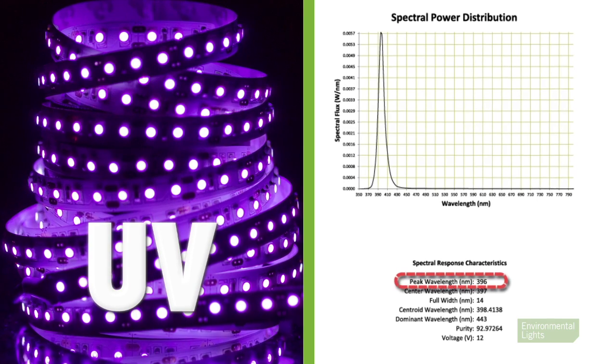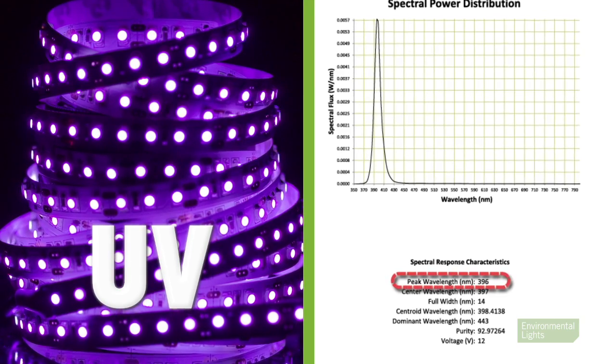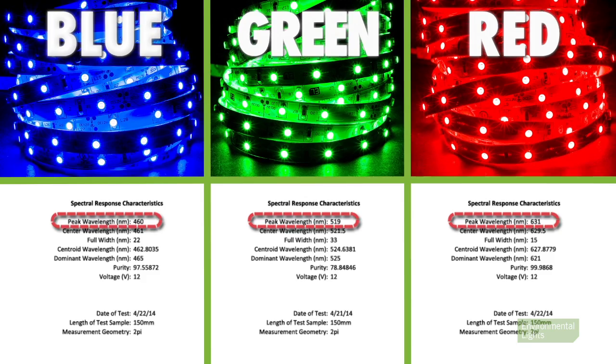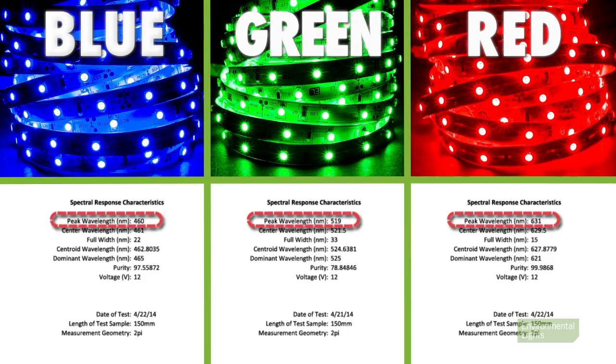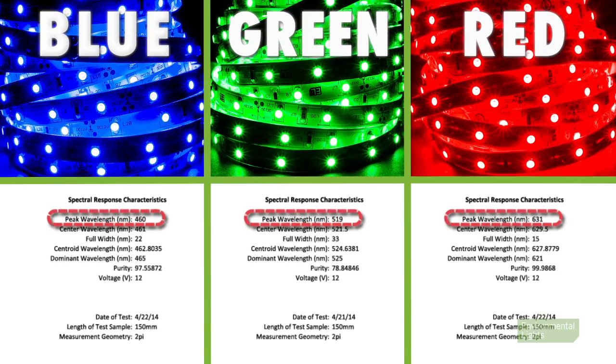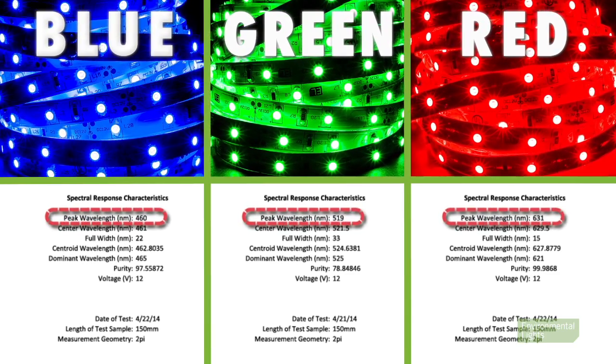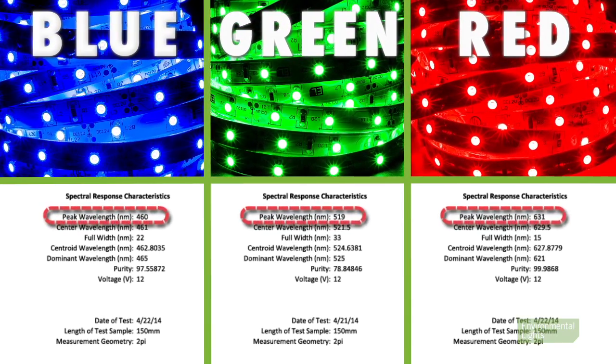If the measured LED product is colored, the peak wavelength is the most common parameter used to indicate the color. UV LEDs are around 400 nanometers and below. Blue, green, and red LEDs are around 463, 520, and 630 nanometers, respectively.